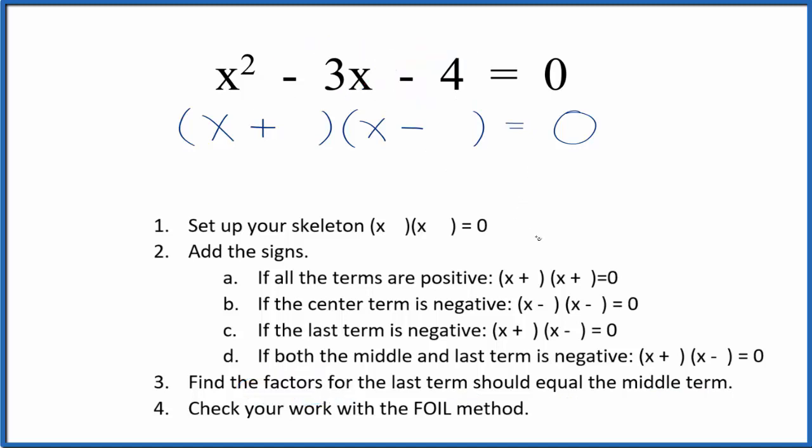So if we look at the factors for 4, we could have 1 times 4 or 2 times 2. Those are our factors. And I could see if I put a 4 here and a 1 here. So this should be correct.